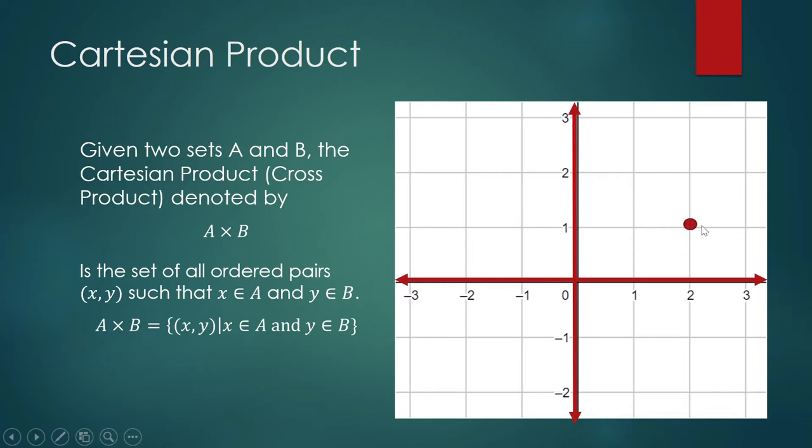This point, for example, is an element of R cross R, and its coordinates are (2,1). So 2 is the x coordinate or the first coordinate, and 1 is your second coordinate.